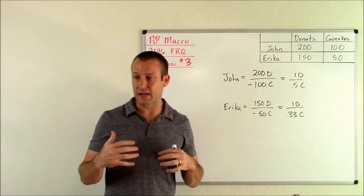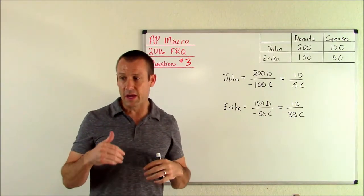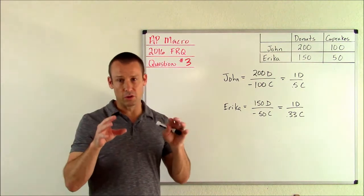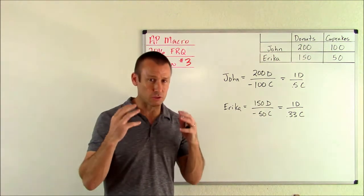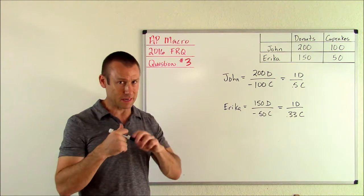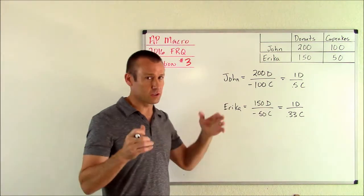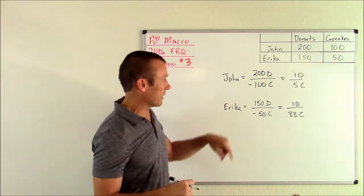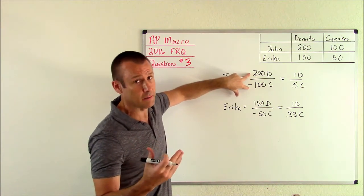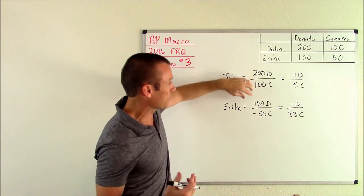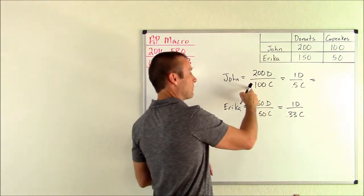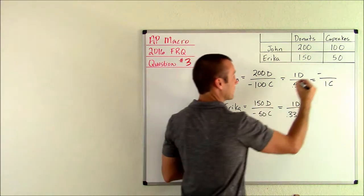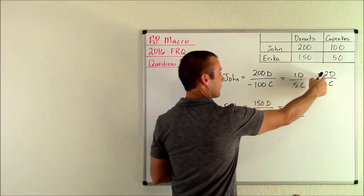Part C: Assuming that John and Erica decide to specialize according to their comparative advantages, and that one cupcake is exchanged for four donuts. We're going to do a little bit of work here because they're going to want us to know who is this good for. I want to first get my opportunity cost for both of them in terms of one cupcake. I'm going to divide them both by 100. If I divide both of these by 100, now I've got it in terms of one cupcake. 200 divided by 100 is two, two donuts. When John makes one cupcake, he gives up two donuts.